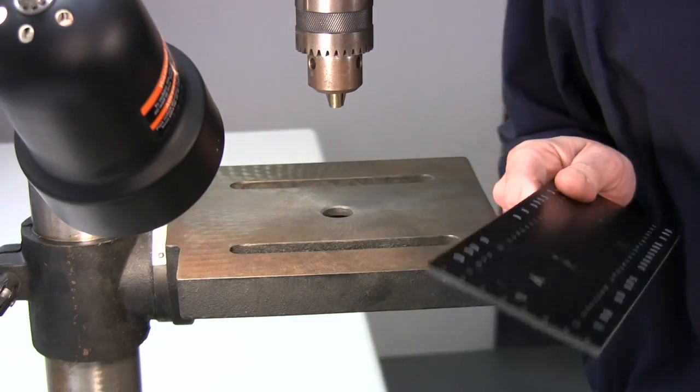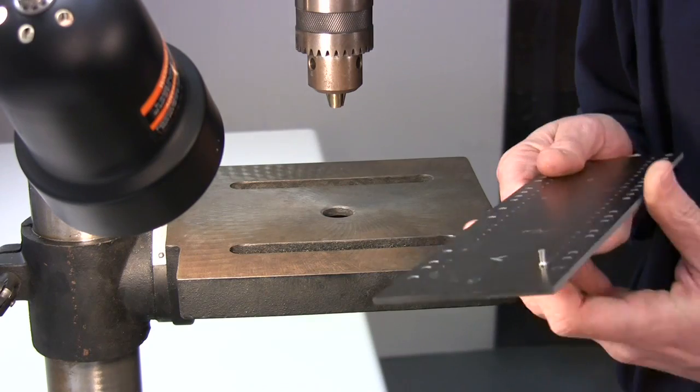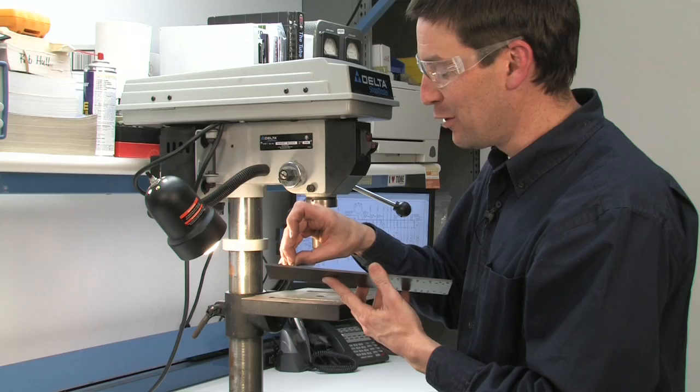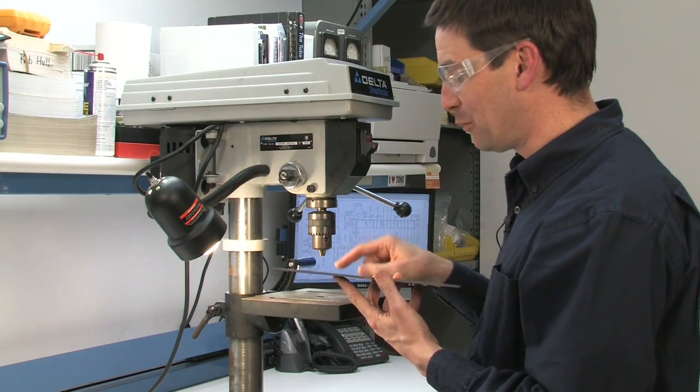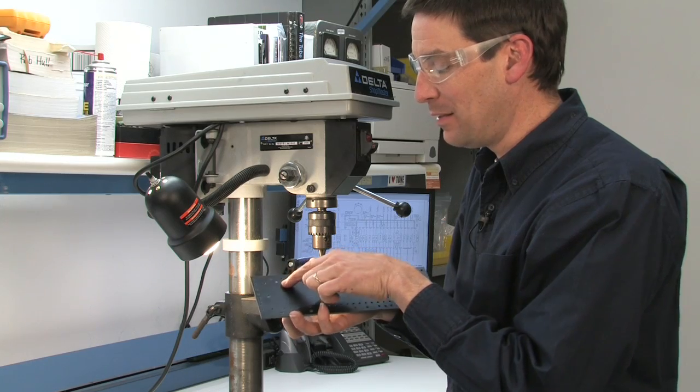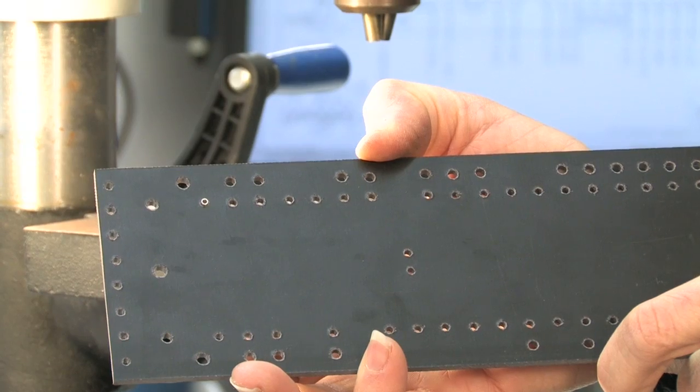The holes for these particular turrets are supposed to be 3/32nds, which is what I drilled. You'll see that the turrets fit right into the holes. Now the problem is they also come right out. So what we're going to do is have some tools put in our drill press that's going to basically bend the back of this turret tightly outwards so that it will stay in the board. It won't come out.